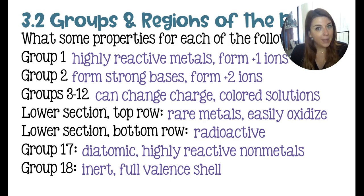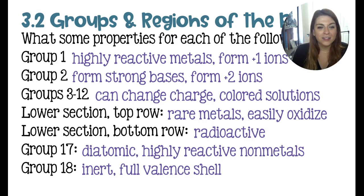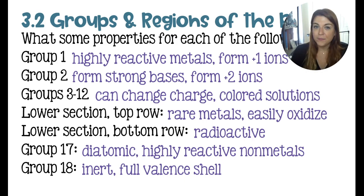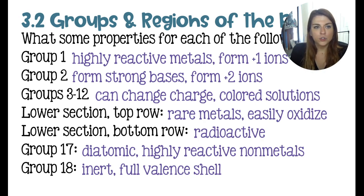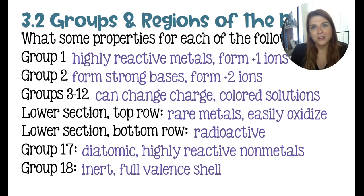Properties of the metalloids, which I left off: they are somewhere between a metal and a non-metal and they can be found on two sides of the staircase line. They're typically shiny but brittle — shiny like metals and brittle like non-metals.